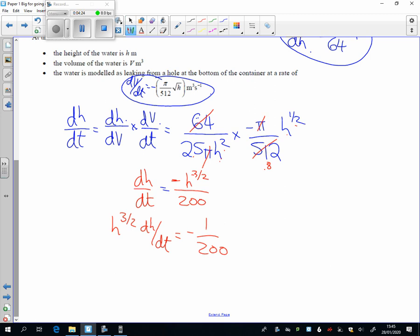That tiny mistake isn't worth me going back over four minutes. So we've got h to the half divided by h squared is h to the minus 3 over 2—I forgot that minus there when I did it. I'll do the next part in another video.